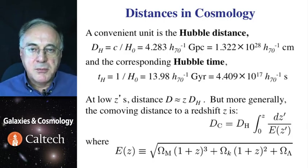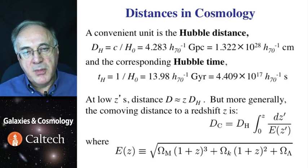At low redshifts, the expansion is linear. Hubble's law applies, and the distance is simply redshift times the Hubble distance. But the further out we go, the relativistic effects come into play, and things are a little more complicated.